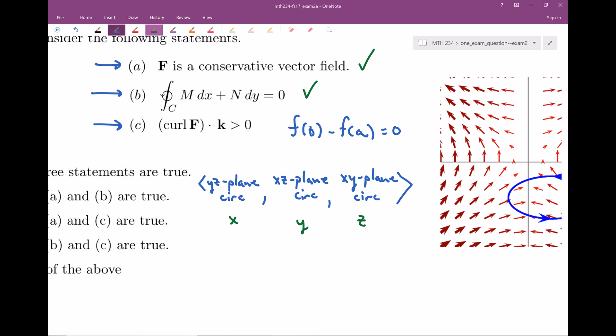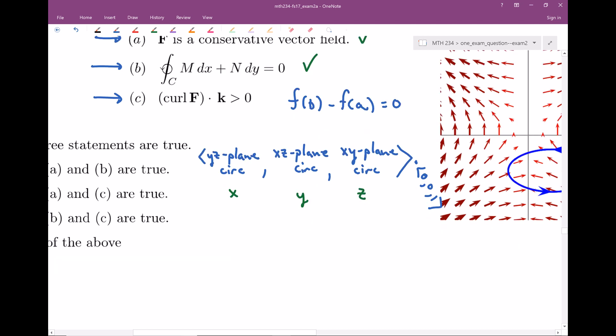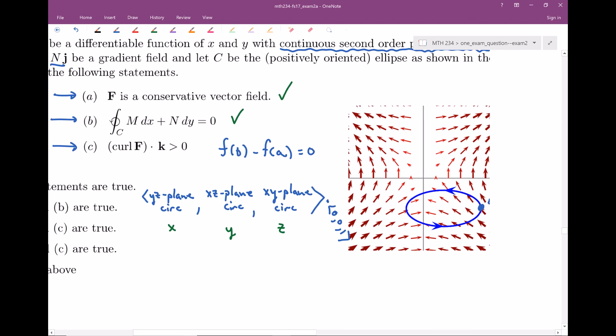So if you were to go ahead and dot product this along with the vector k, remember k looks like, and I'm going to have to snake around here a little bit, k is zero, zero, one. It's the standard unit vector here, zero, zero, one. So when you dot product that, those together, you're going to have zero times the XZ plane circulation, which is good because this is the XY plane. We just have X's and Y's here.